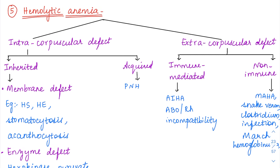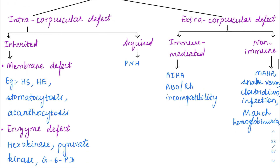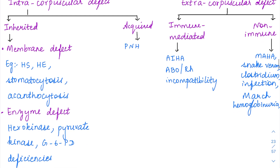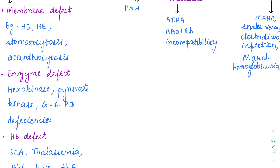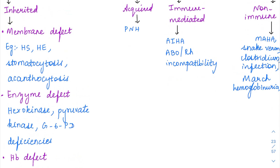Under intracorpuscular defects, what are the things which can be problematic in RBCs? Either it could be an inherited kind of defect or an acquired kind of defect. Under acquired defects, the only example is going to be paroxysmal nocturnal hemoglobinuria. Under inherited disorders, either the RBC membrane could be defective, or the enzymes present in the RBCs could be defective, or the hemoglobin present in the RBC could be defective. The various examples for each we will be discussing in detail.